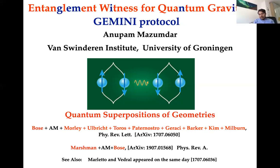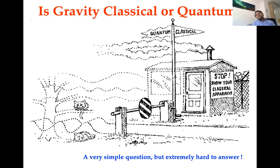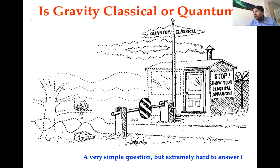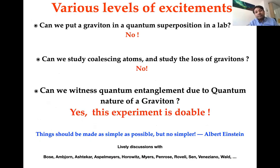The question is very simple: is gravity classical or quantum? It's a very simple question but extremely hard to answer. One reason is that gravity is extremely weak — it's the weakest of all interactions we know — and that prohibits many attempts so far. We would like to see perhaps one day a very clear view of whether gravitational interaction is classical or quantum in nature.